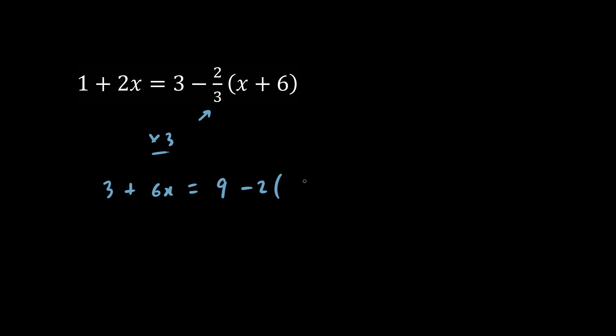Because the 3s cancel out. Next, we copy down the brackets, we have x plus 6. This part is not affected by multiplying by 3.